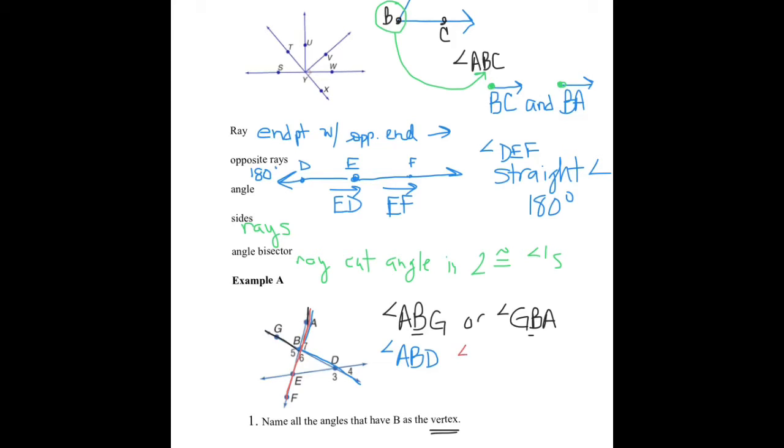We have angle ABE. Which is a straight angle because that makes a straight line. And this angle, angle ABE, could also be called angle ABF.